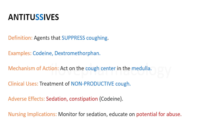The major adverse effect of codeine-containing cough syrup is sedation and constipation. The nursing implication is to monitor for sedation and educate the patient regarding the potential for abuse — patients should not use this medication frequently or repeatedly, as it can become addictive due to its sedative nature. The concentration of codeine in cough syrup is kept very low to reduce abuse potential, but addiction can still occur.